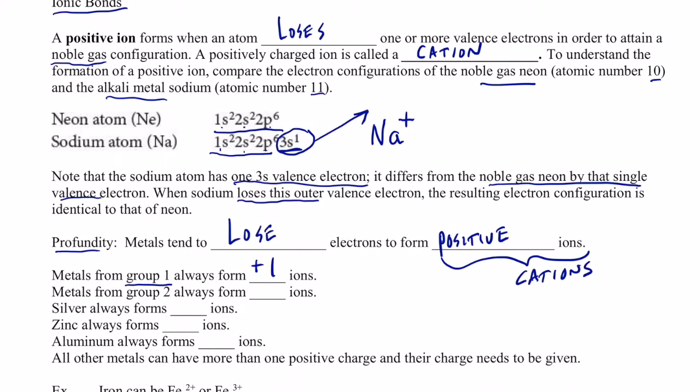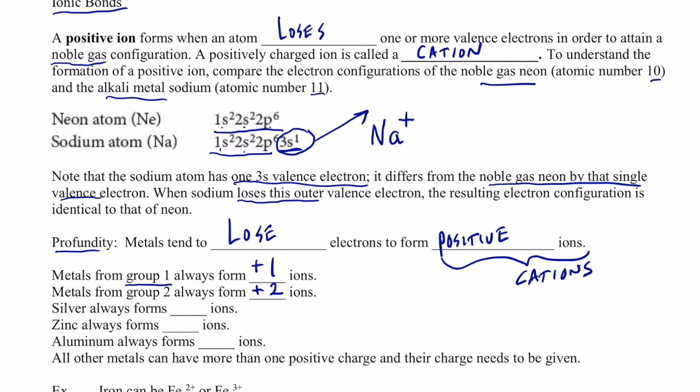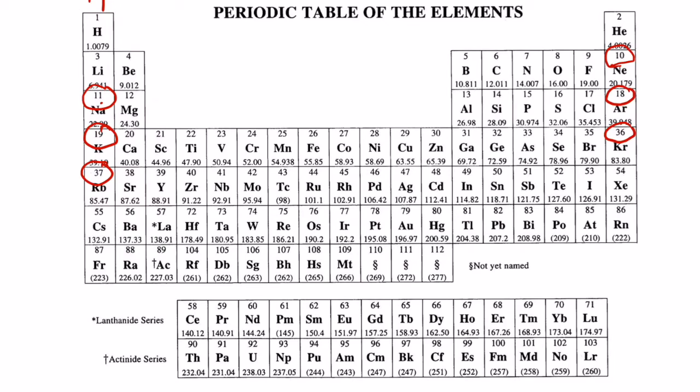The metals in group 2 will always form positive 2 ions. Let's see why by looking at the periodic table. If we take a look at beryllium, its atomic number is 4 and it has 2 valence electrons. If it loses 2 electrons, won't it have the same configuration as helium? Magnesium with 12 electrons. If it loses 2, won't it have a configuration similar to neon's? Calcium with 20 electrons. If it loses 2, won't it have its electron configuration, which will be identical to argon's, and so on down the group. All alkaline earth metals will form positive 2 ions.